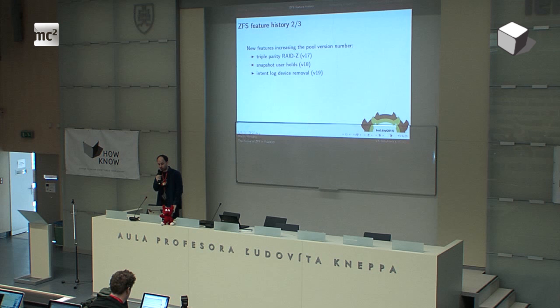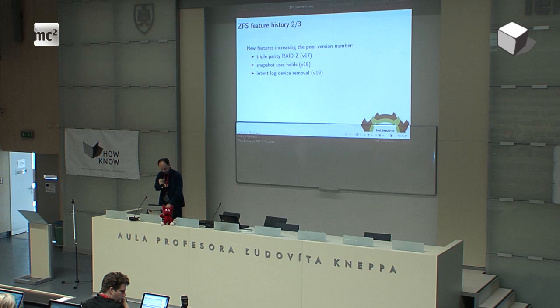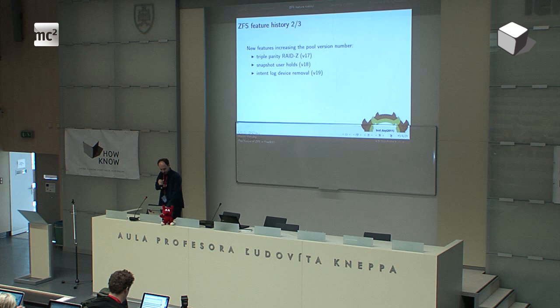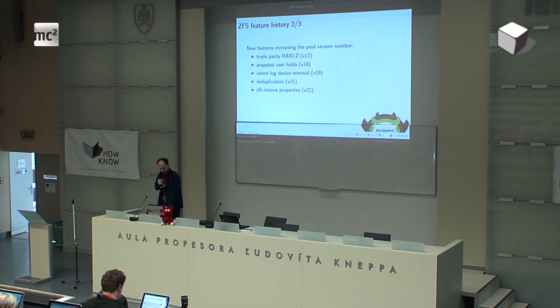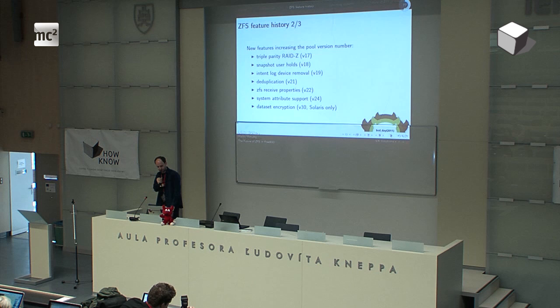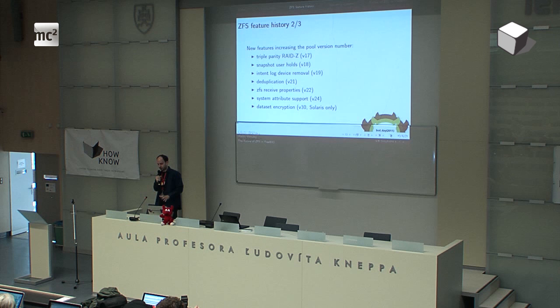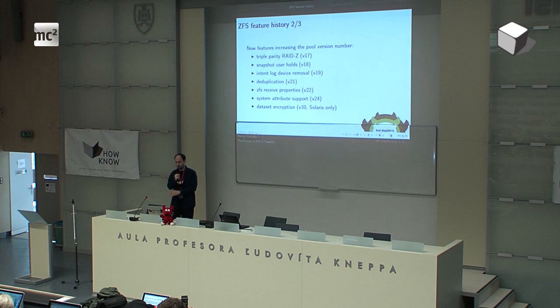Continuing the feature history: user and group space accounting (traditional Unix quota) was introduced in version 15 — before that you had only per-filesystem quota. Triple parity RAID in version 17, which will be new to FreeBSD. Snapshot user holds in version 18, allowing you to lock a snapshot from deletion. Removal of log devices in version 19 — many people had requested this because previously you could add log devices but could not remove them. Deduplication in version 21. Received properties in version 22. System attribute support in version 24. Dataset encryption in version 30 — not available in open source. One of my personal killer features is the ability to send snapshots to remote systems including incremental snapshots, providing lightweight data replication.